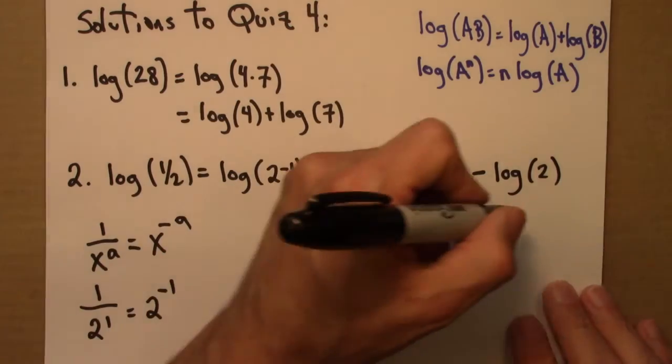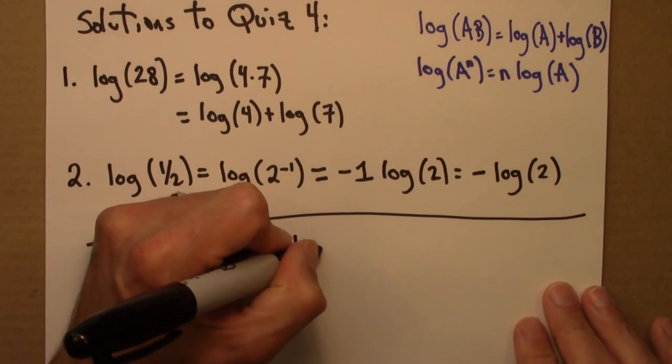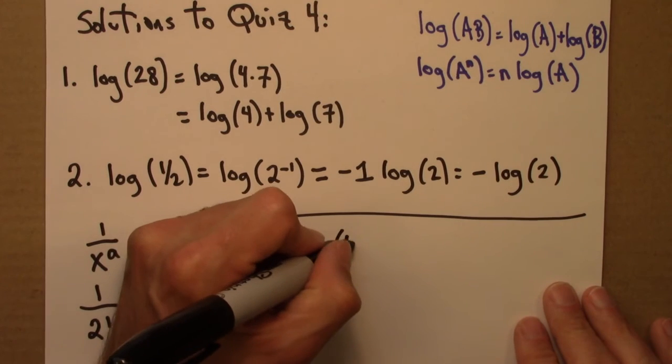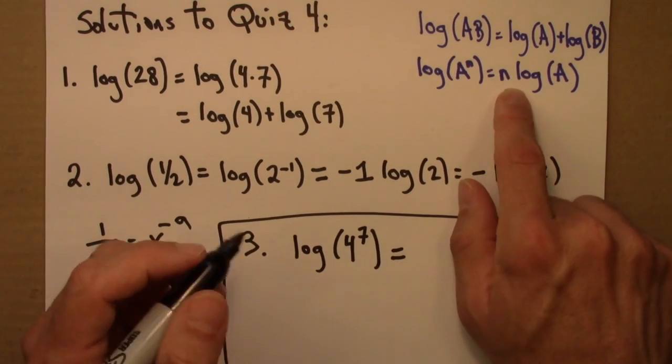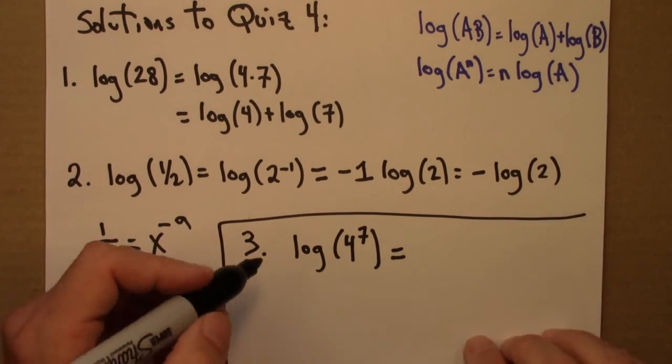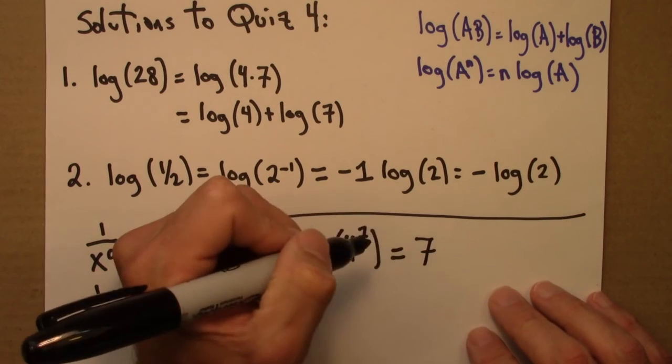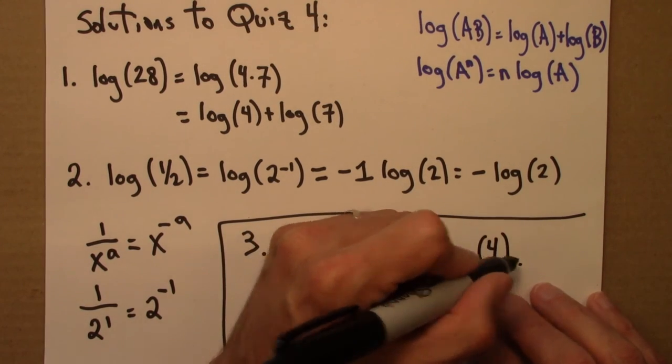Alright. Last question. Log of 4 to the 7. Well, we just immediately use this exponent property again. We use that property a lot in this course. So that's 7 log 4.